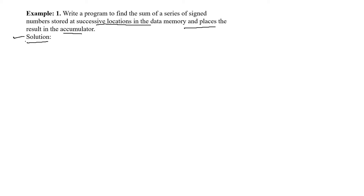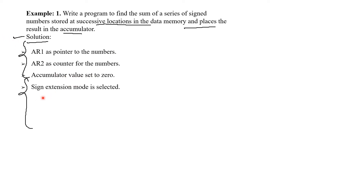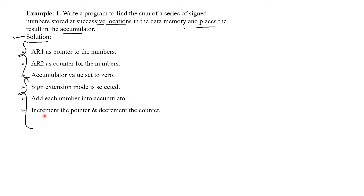To write the program, first we will write the algorithm. The algorithm starts as follows: first, we will have the Pointer Register AR1. Next, AR2 serves as a Counter for the numbers. The Accumulator will be set to 0. Next, a Sign Extension Mode bit is selected since we are performing addition of signed numbers. We then add each number into the Accumulator and store the result in the Accumulator. While performing addition, increment the Pointer to go to the next data and decrement the Counter until it completes the addition of all values.